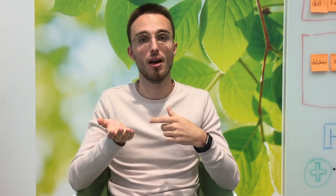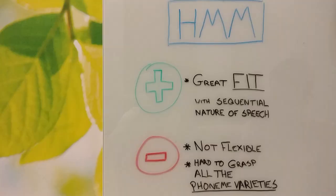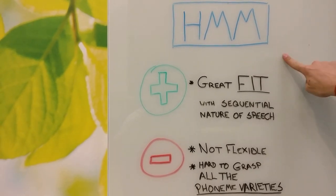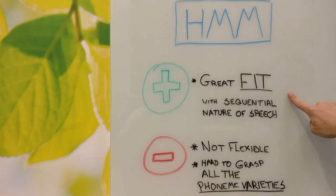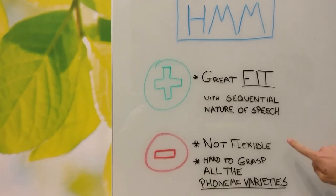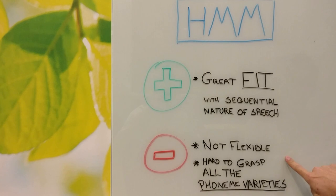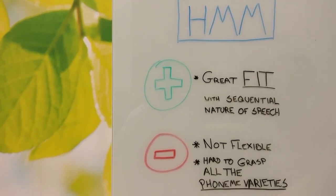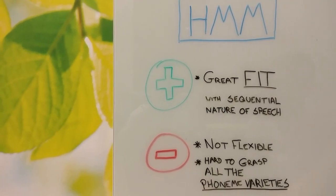That's right, Ihani. Now, people who sometimes dictate to their phone, they may already have seen this happening. So the more input you give to your phone, then it may be that sometimes words in the beginning of your phrase start changing, because the system has become wiser, it knows what you're trying to say or not trying to say, and that's why it changes some words. So in short, about the hidden Markov model. It has a great fit with the sequential nature of speech. However, it's not that flexible. Also, all the varieties of the phonemes, you cannot really grasp it. It's too much.